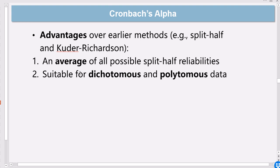I haven't talked about this, so just one more thing before I close this video. It's an advantage of Cronbach's alpha over earlier methods is that it's an average of all possible split-half reliabilities because, for example, in a split-half reliability analysis, you will need to split your data or your test into two halves.